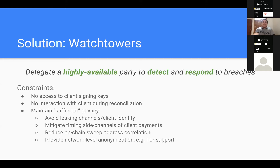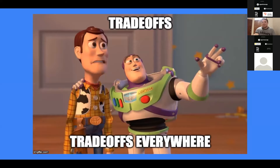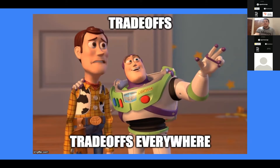Another privacy consideration is network-level anonymization — like Tor support. The current watchtower protocol in LND is abstracted so you can drop in a TCP or Tor connection and everything works the same. This brings us to a design space that is really massive, with around 10 to 12 different dimensions of privacy to be aware of.